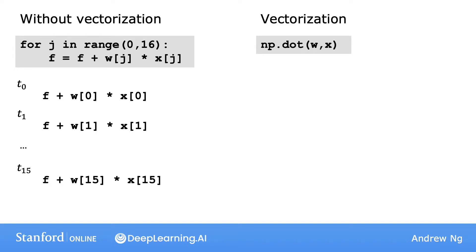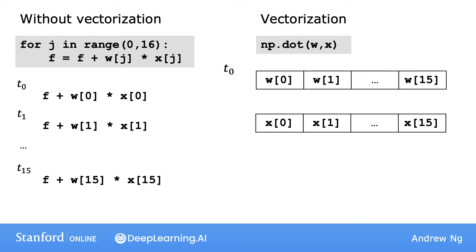In contrast, this function in NumPy is implemented in the computer hardware with vectorization. So the computer can get all values of the vectors W and X, and in a single step, it multiplies each pair of W and X with each other, all at the same time in parallel.